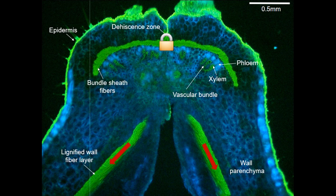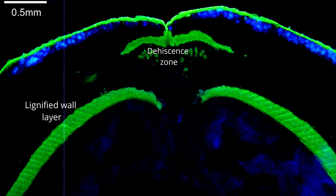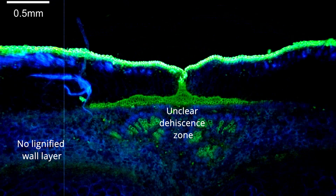In wild legumes, the lignified wall layers are often extremely thick and create significant tension on the dehiscence zone. In domesticated legumes, the wall fiber layer is often reduced or absent entirely, and there may not be a clear dehiscence zone.